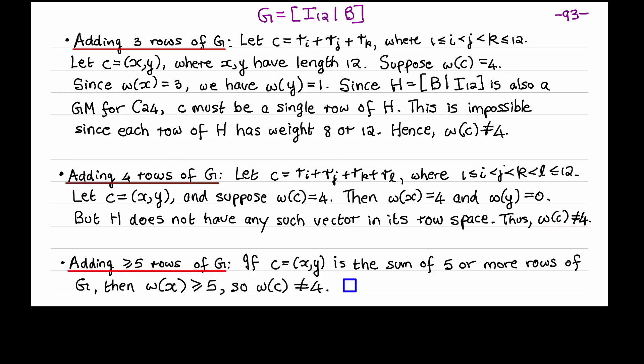Lastly, let's consider the case where we add 5 or more rows of G together. If C is such a codeword, then its left half x is the sum of 5 or more rows of the identity matrix. And hence the weight of x is at least 5. Thus, C can't have weight equal to 4. So we've proven that no non-zero codeword in C24 can have weight equal to 4. So the weight of C24 must be 8. And hence C24 has distance 8.